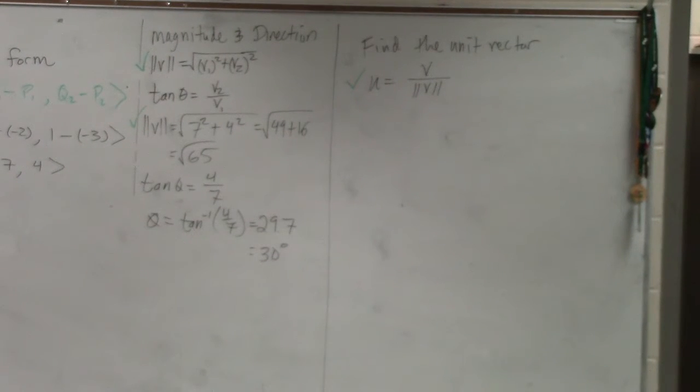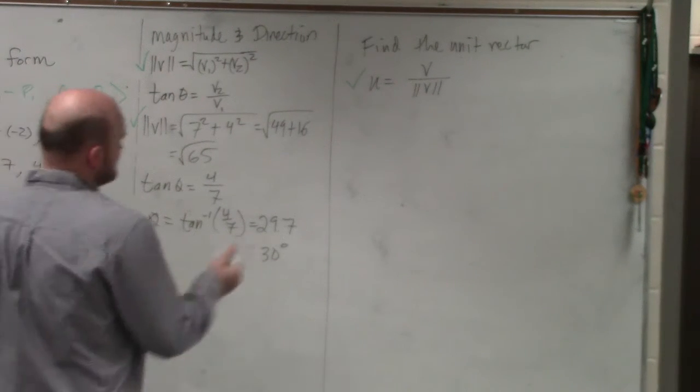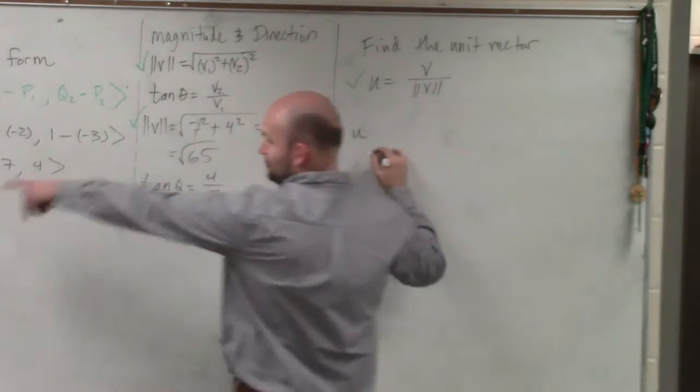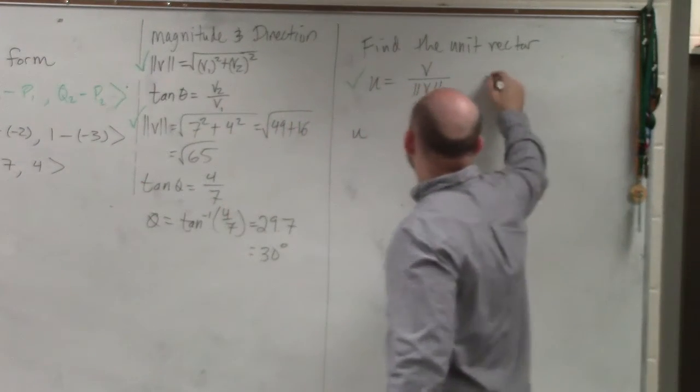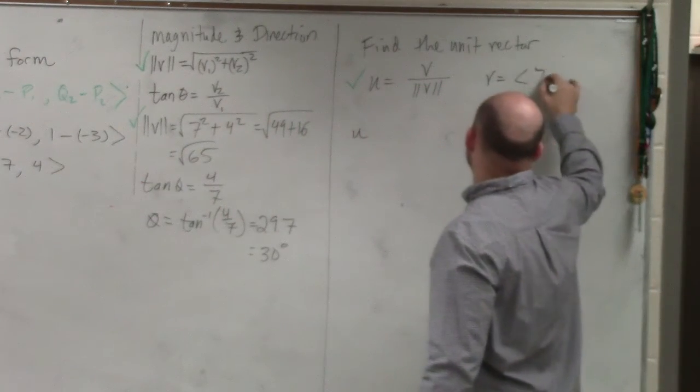If we go ahead and take a look at this, everybody—or at least the majority of people that I saw—if we have our vector v, which is v equals 7 comma 4,